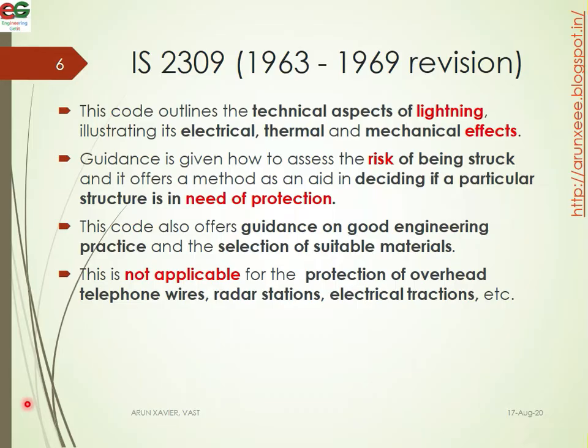The next IS code is IS 2309. This code was first issued in 1963 and revised in 1969. It is the standard for protection of buildings and allied structures against lightning.